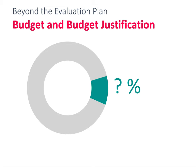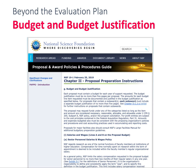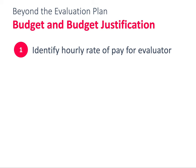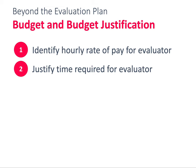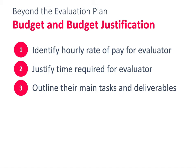ATE evaluations tend to be between 4 and 10 percent of a project's total budget. For smaller projects with smaller evaluations, that percentage might lean towards the lower side. When it comes to the budget justification, according to NSF's Proposal and Award Policy and Procedures Guide, commonly referred to as the PAPPG, there are three main items you'll want to address. First, identify the hourly rate of pay for your evaluator. Second, justify the time required for the evaluation activities — this should match the timeline and the evaluation activities discussed in the evaluation plan section. Finally, outline the evaluator's main tasks and deliverables. Make sure these numbers are reasonable, justified, and don't seem to be pulled from thin air.